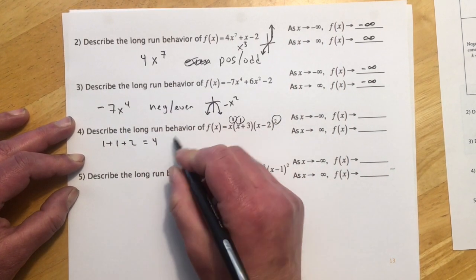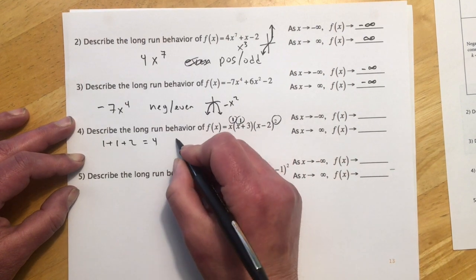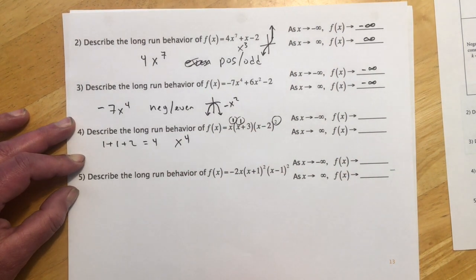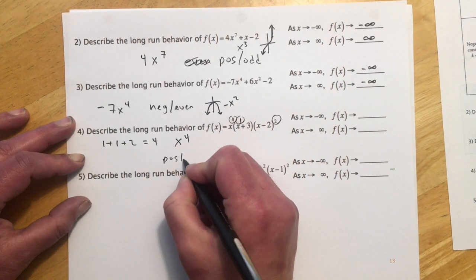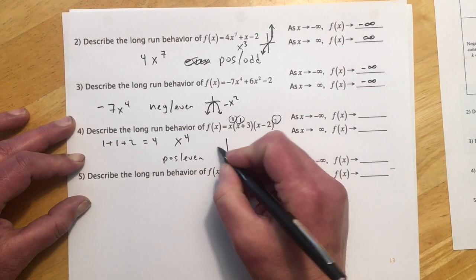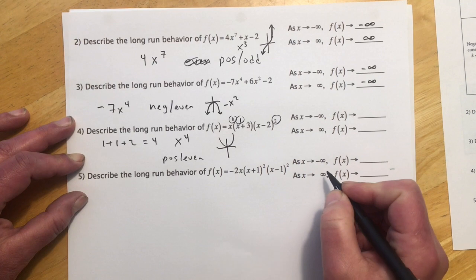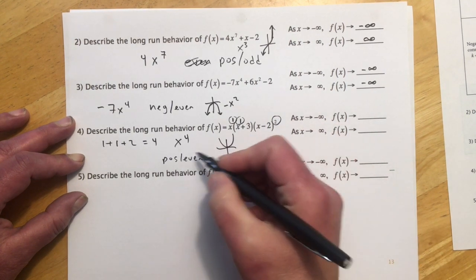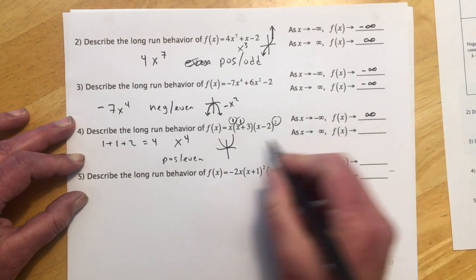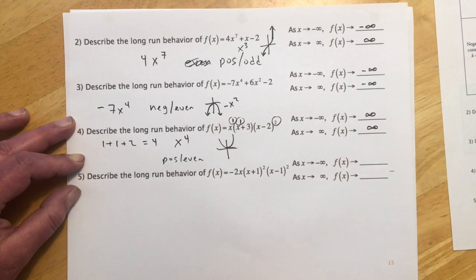Which means if I foil all this mess out, the leading term would be x to the fourth. So that is positive even, and positive even looks like x squared. So as x goes to negative infinity, y goes to infinity, and as x goes to positive infinity, y goes to infinity.